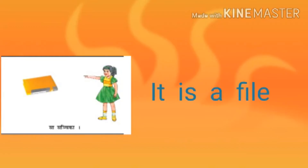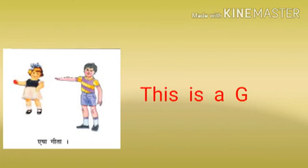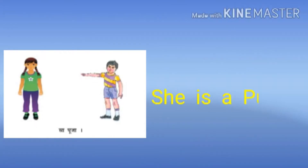The next Strilinga Ekavachnam word is Sa Sachika — it is a file. The next word is Isha Gita — this is Gita. The last Strilinga Ekavachnam word is Sa Puja — she is Puja. Isha and Sa are Strilinga Ekavachnam words covering all feminine gender Ekavachnam examples.